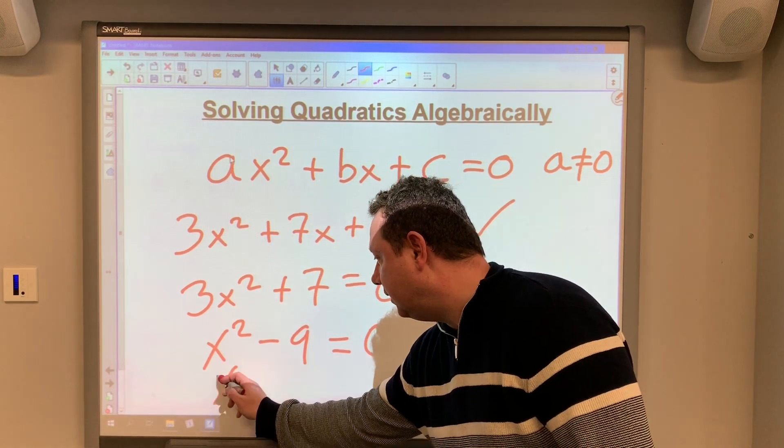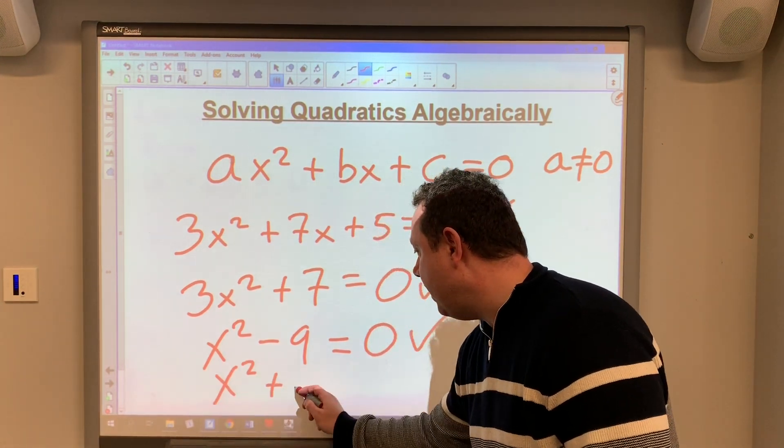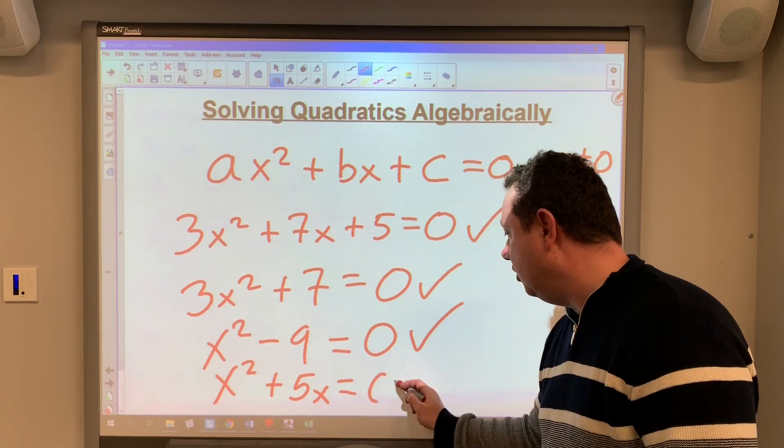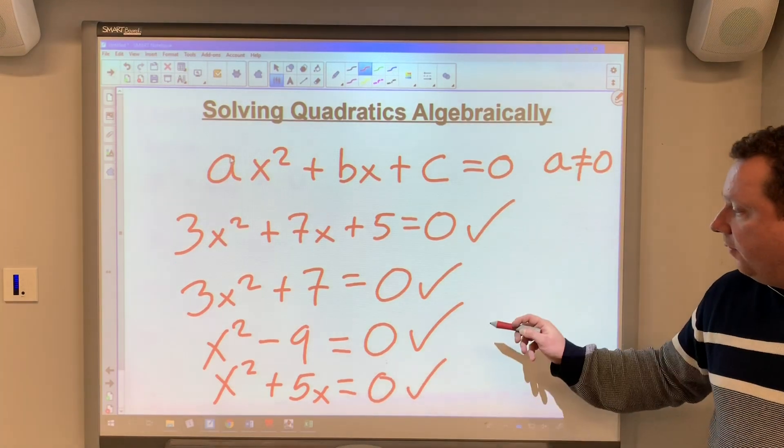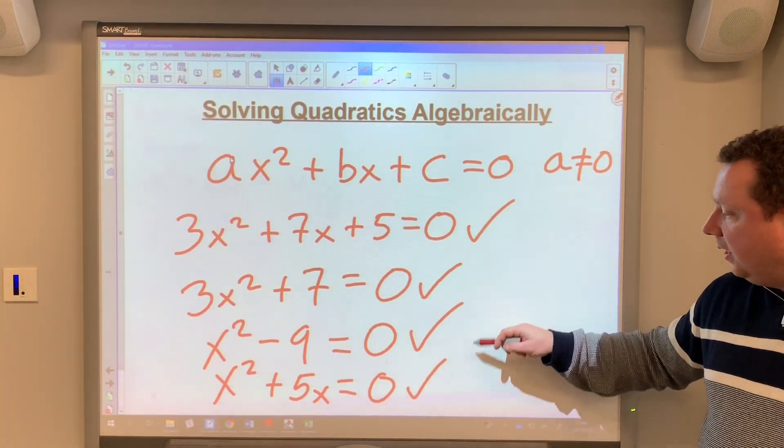And the other type we'll be covering is the type where there is just a common factor between the two. So we're going to be covering this type here and this type here.